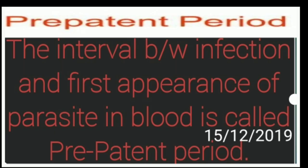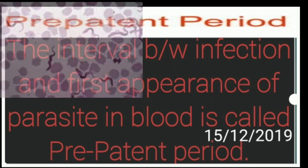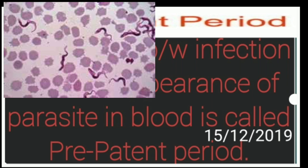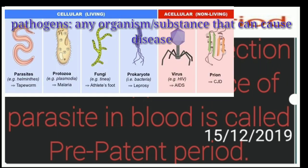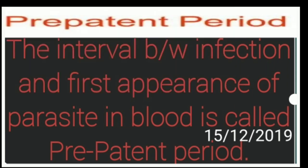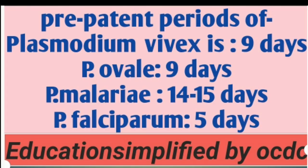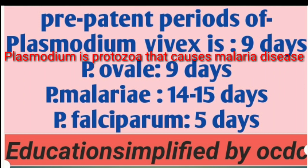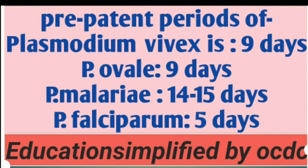The pre-patent period is the time interval between infection and the first appearance of parasite in blood. For example, if a pathogen enters our body on the 1st of a month and is detected in the blood on the 7th, then 7 days is the pre-patent period, also known as the latent period. The pre-patent period for Plasmodium vivax is 9 days, Plasmodium ovale 9 days, Plasmodium malariae 14 to 15 days, and Plasmodium falciparum 5 days.